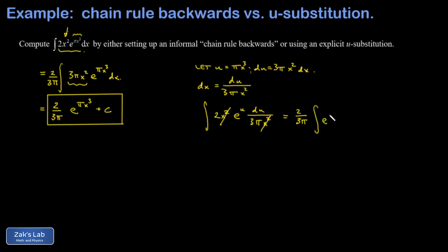I end up with a 2 over 3π integral of e to the u du. That's 2 over 3π e to the u for the anti-derivative plus C.